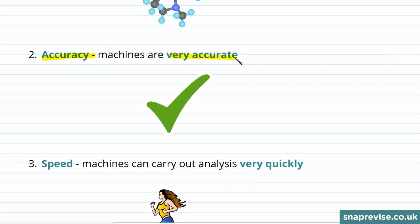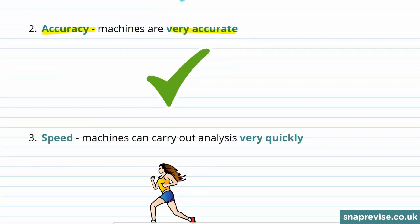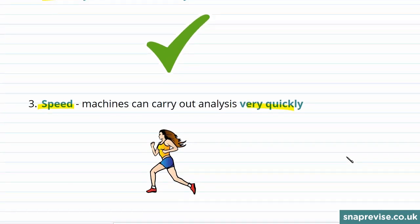Secondly, machines are very accurate, and using a machine removes human error. Thirdly, machines are very quick and may be able to run multiple samples at the same time.